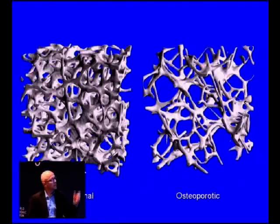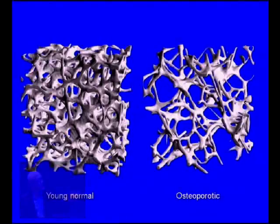So this is an example here of what it would look like in a young normal in terms of the three-dimensional bone structure. And here you can see an osteoporotic person. You can already see the differences that happen between the two, quite dramatic, but it's a static image.